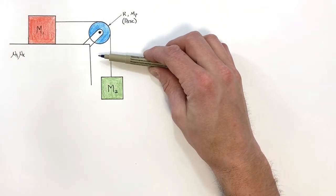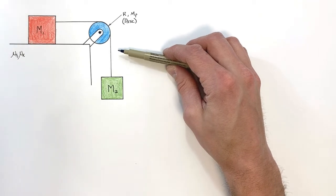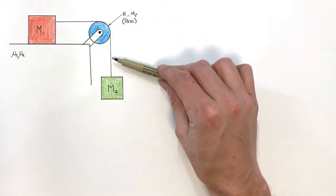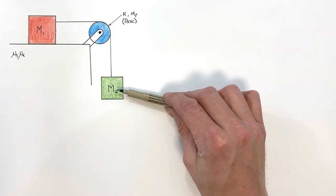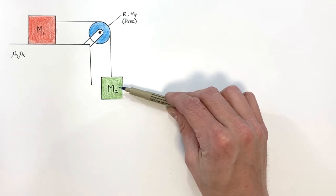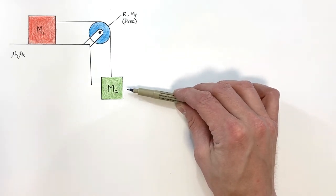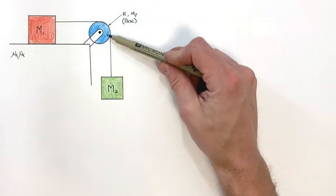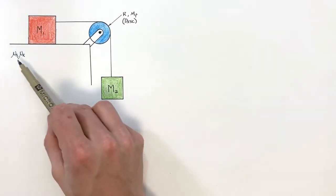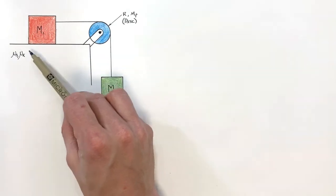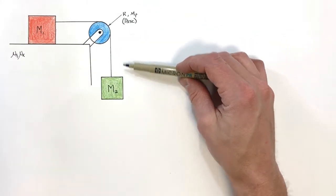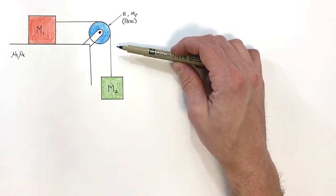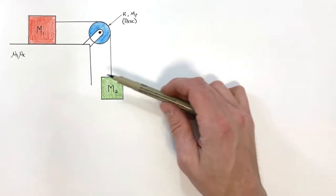Today we're going to take a look at the version of the Atwood machine which seems to be the darling child of every physics book ever — a block sitting on a horizontal surface, with a light string run over a pulley down to a hanging block. What we're going to do is look at this problem as realistically as we can: we'll put some mass on this pulley and some friction between the block and the surface. If you can do this problem, you'll be able to work out any Atwood machine set up like this, because it only gets simpler from here.